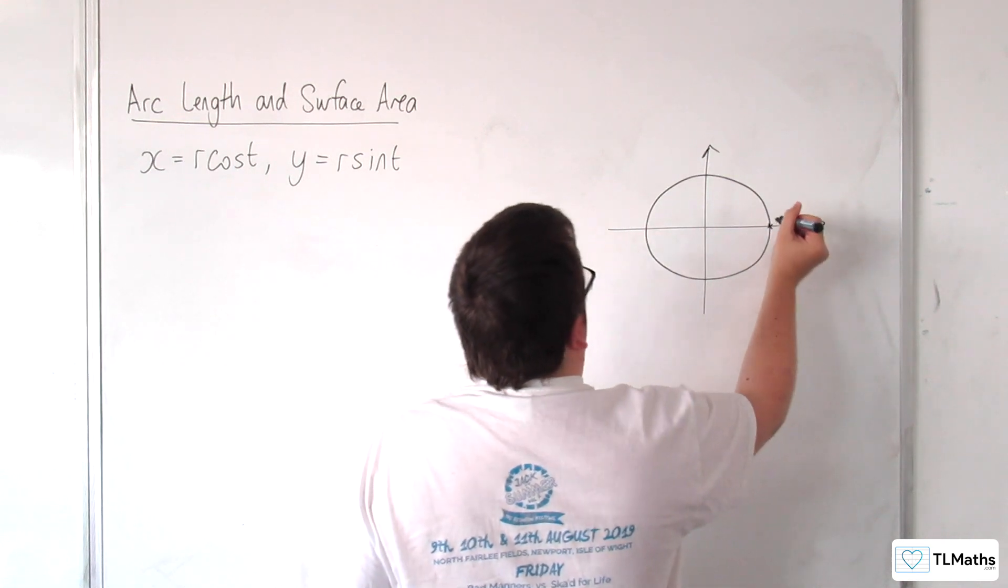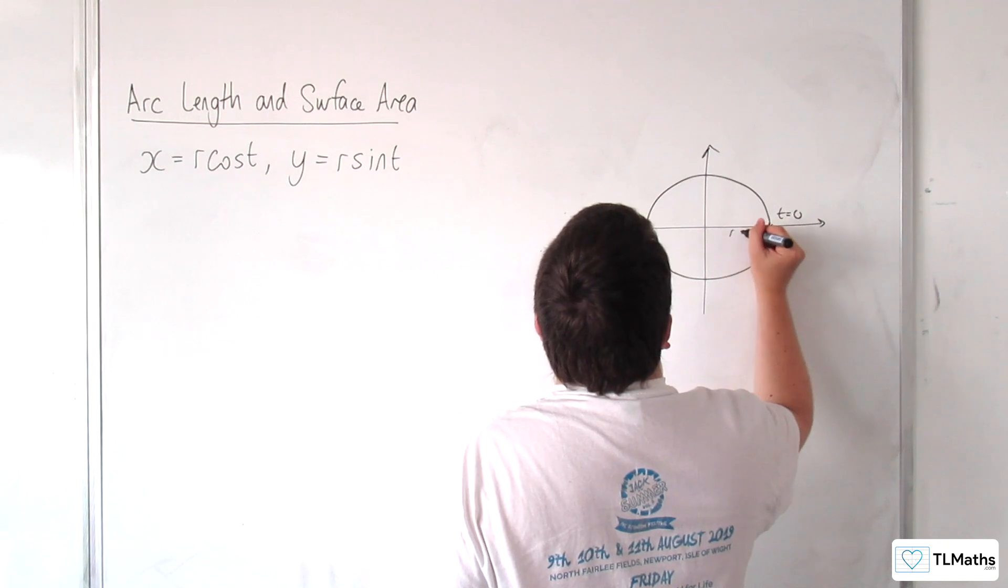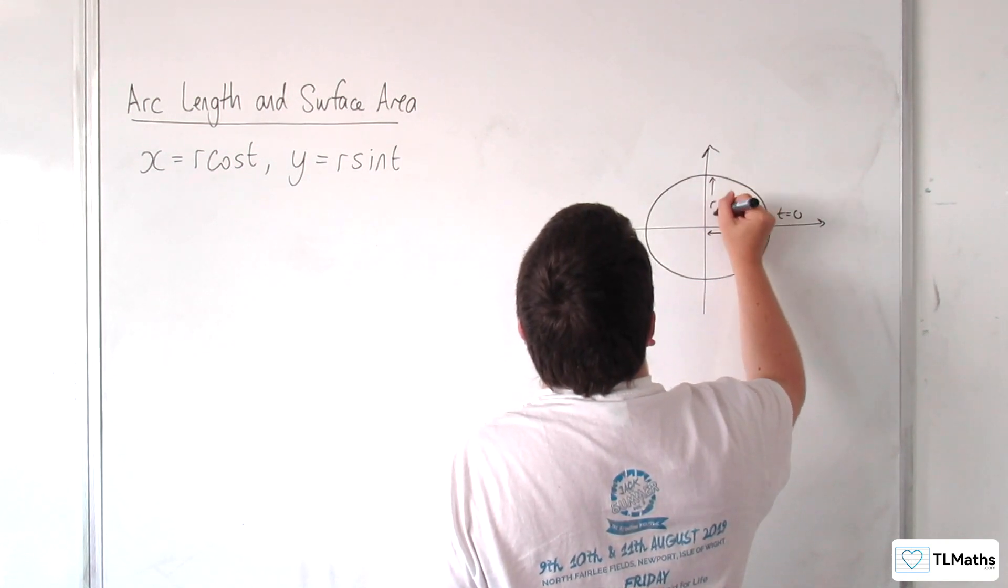Okay, so from this point is t is 0. And also that's of length r, and that's of length r as well.